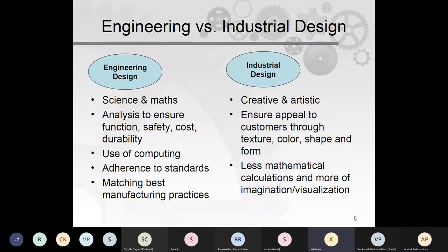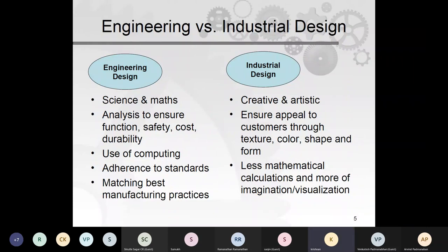Engineering design also means adherence to standards, matching best manufacturing practices, and analyzing the best manufacturing method for each part. Industrial design, by contrast, is more creative and artistic — ensuring appeal to customers through texture, color, shape, and form. It involves less mathematical calculation and more imagination, visualization, and observation of people's needs — including ergonomics.